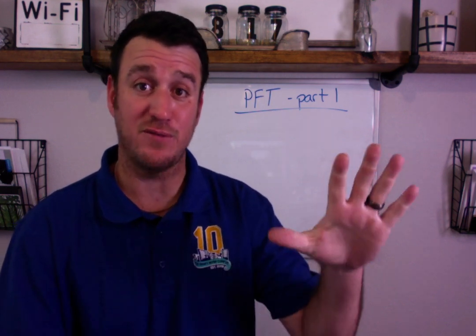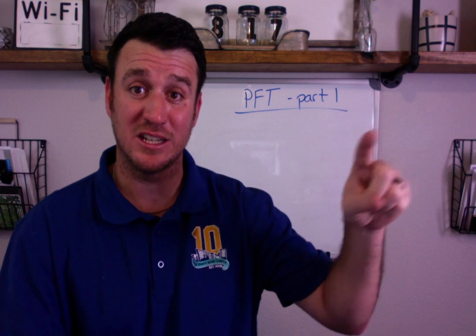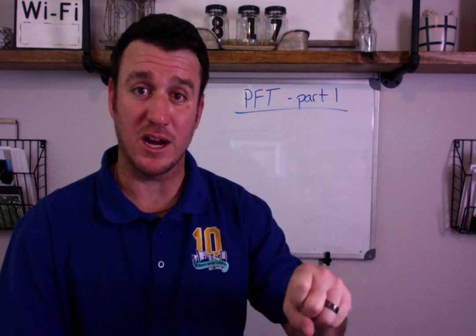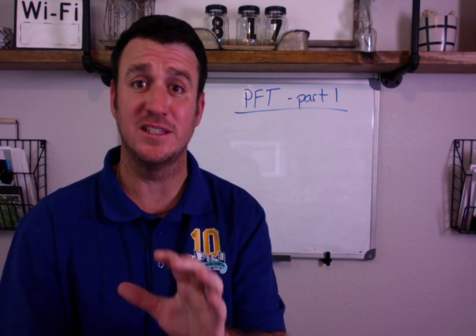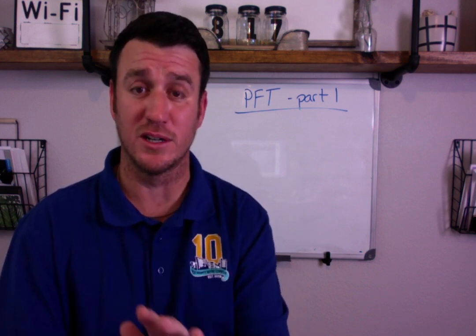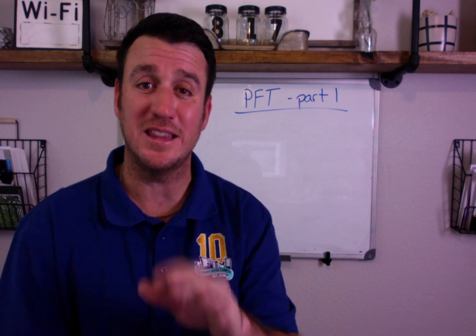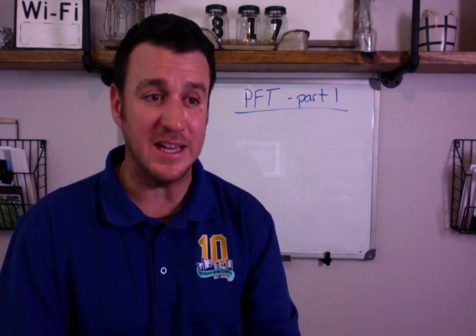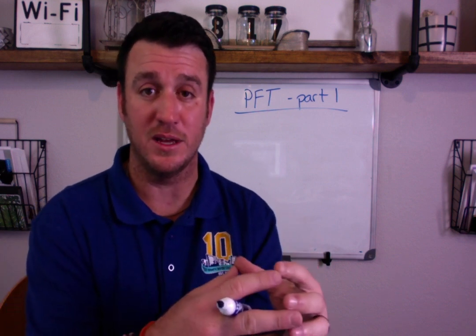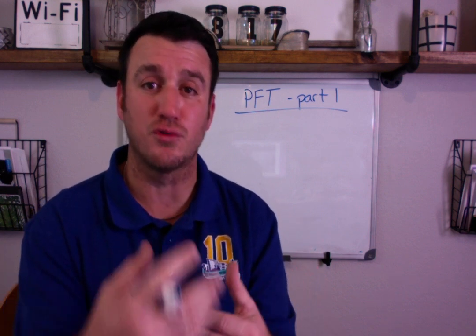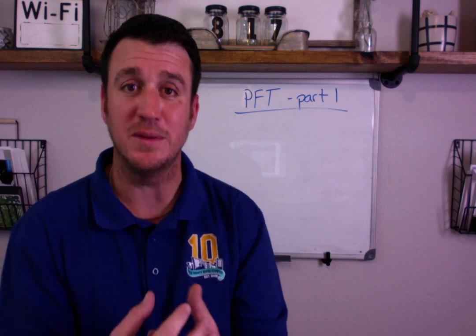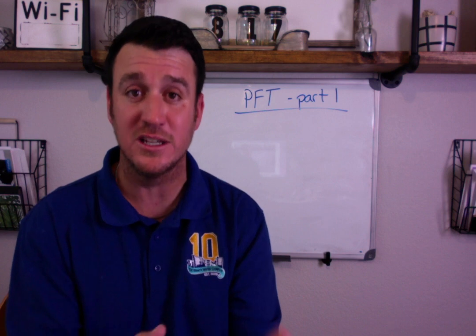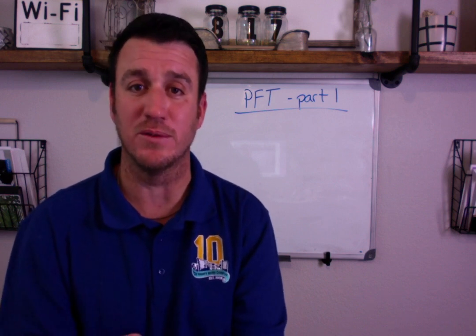Obstructive lung diseases — there are five of them: cystic fibrosis, bronchiectasis, asthma, chronic bronchitis, and emphysema. Those five diseases make up the five obstructive lung diseases. These diseases present an airway resistance problem that creates an obstruction to flow, which means these patients can't effectively get air out of their lungs because of the increase in airway resistance.